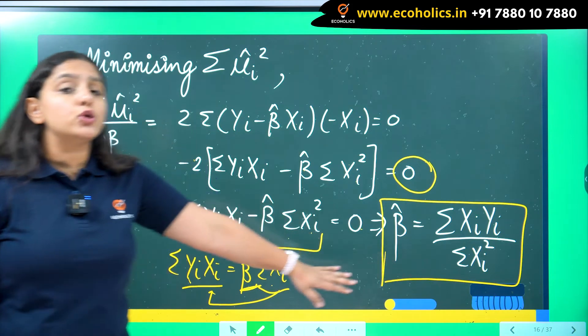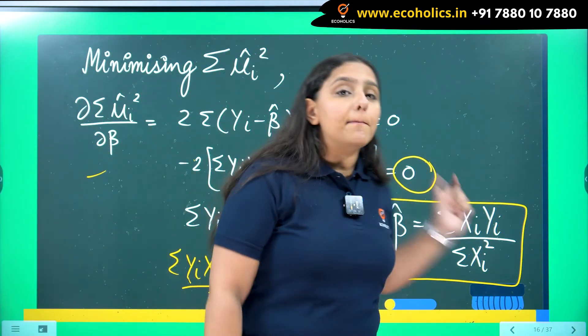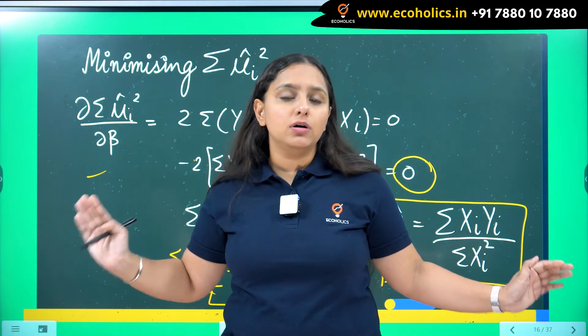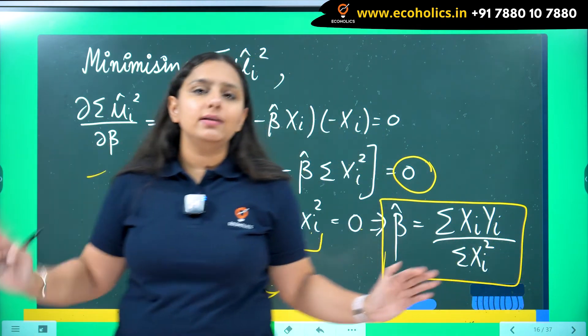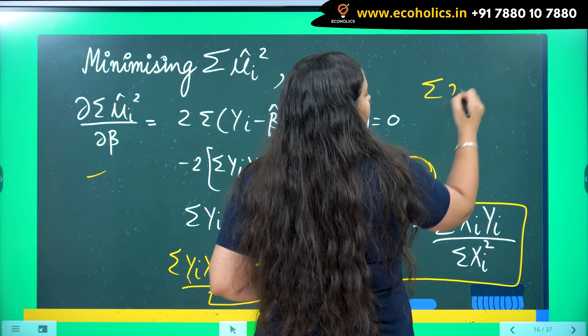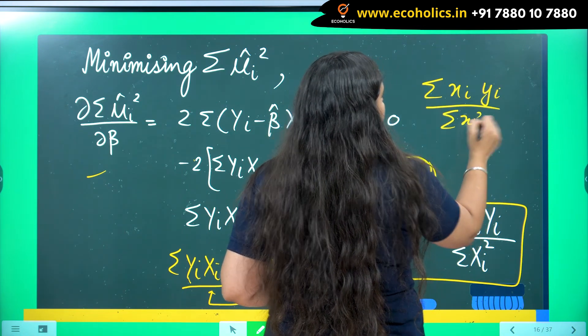So this is the value of slope coefficient in the case of regression through origin. If you compare this value of slope coefficient here with a simple regression, the linear regression model, you will feel a difference.